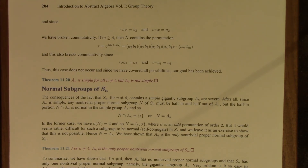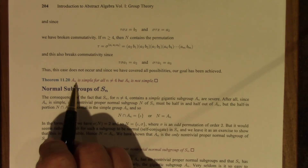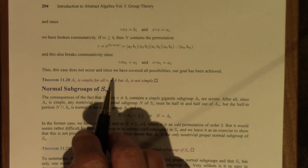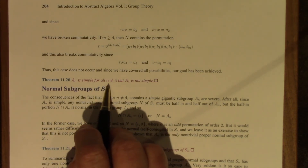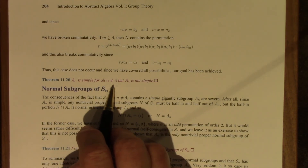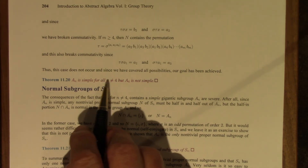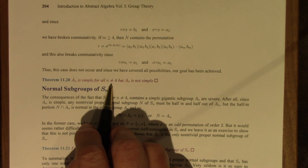So the case where N contains only permutations whose cycle structures are products of transpositions cannot happen. We are done. A_n is simple for all n ≥ 5, and as I asked you to check for A_1, A_2, and A_3, it's true for all n different from 4.